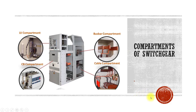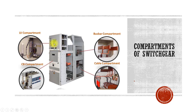Here you can see this is basically MV switchgear. This is the compartment where the relay is installed and where all the control circuitry and mimic is installed. This compartment is called the low voltage compartment, and it is a separate compartment.